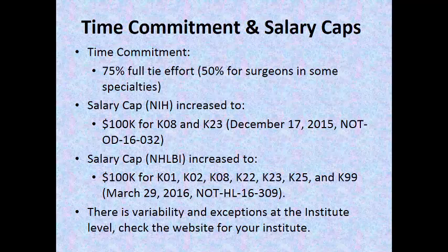The salary support also comes with fringe benefits. At UCLA, benefits can be 30–35% of salary, so the total support for you might be $130,000–$140,000. There is variability by institute — for example, the National Heart, Lung, and Blood Institute recently increased their stipend to $100,000. Once you know which institute you're going to, check their website to see what their K is funded at.